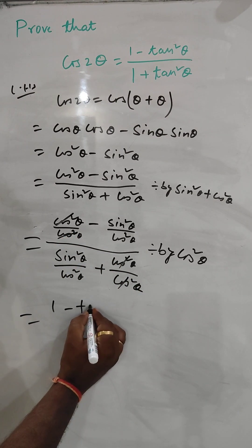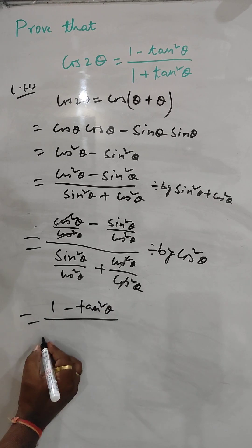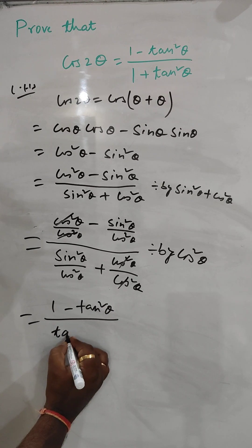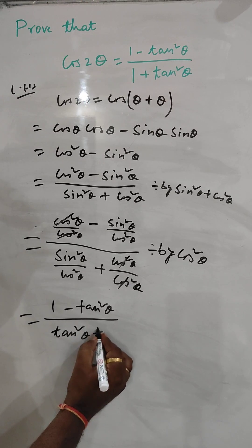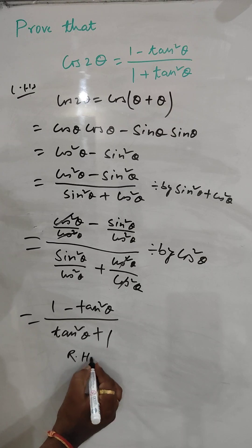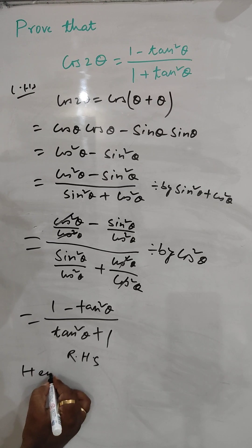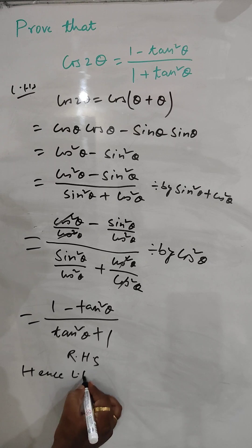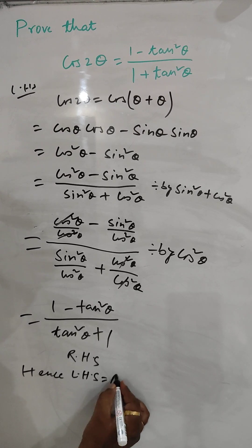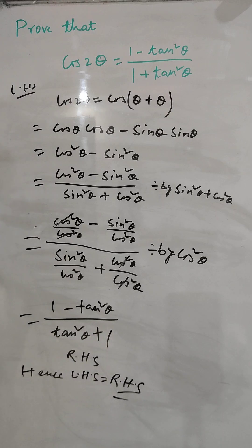This gives us 1 minus tan²θ in the numerator and 1 plus tan²θ in the denominator, which is the RHS. Hence LHS equals RHS. Thank you for watching — please like and subscribe.